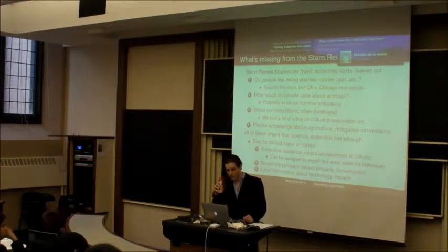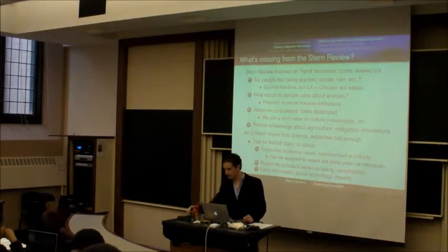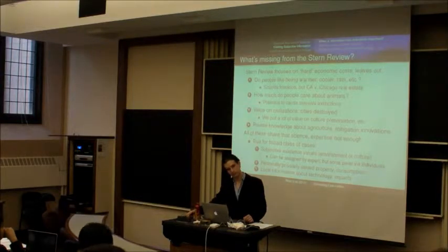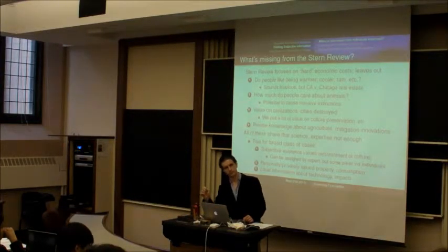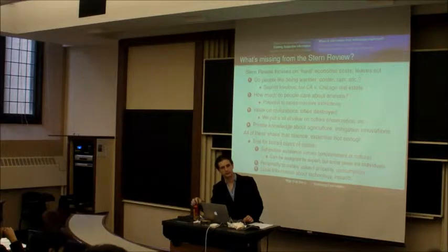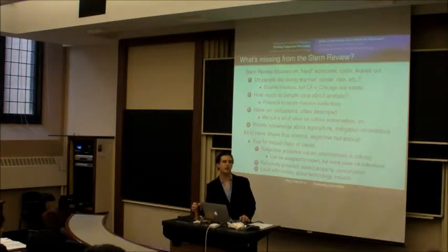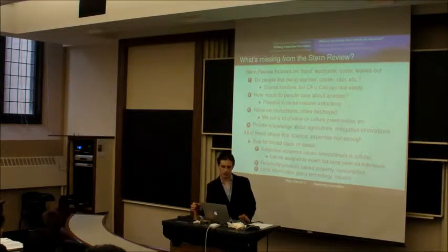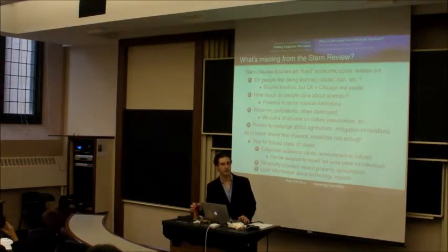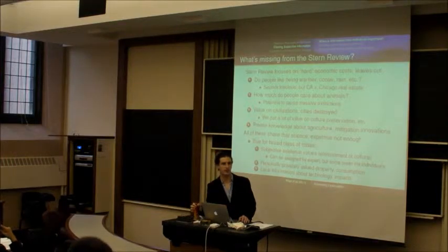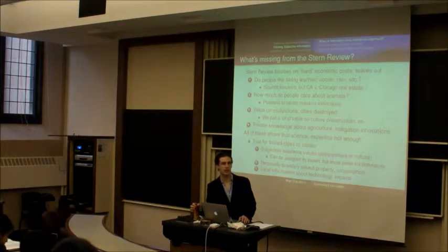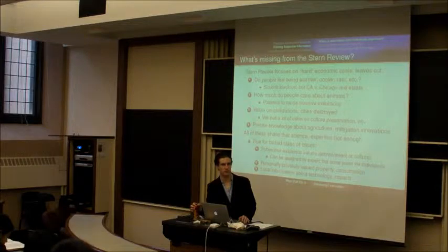Student: I agree with one and three, but two, you could easily get a value of a property. If there's a price at market value and you decline it, then clearly you have a higher value. Instructor: I totally agree that there are ways to get these out of people, and that's what we're going to talk about for the rest of the class. But the point is you couldn't do that without interacting with the relevant person.